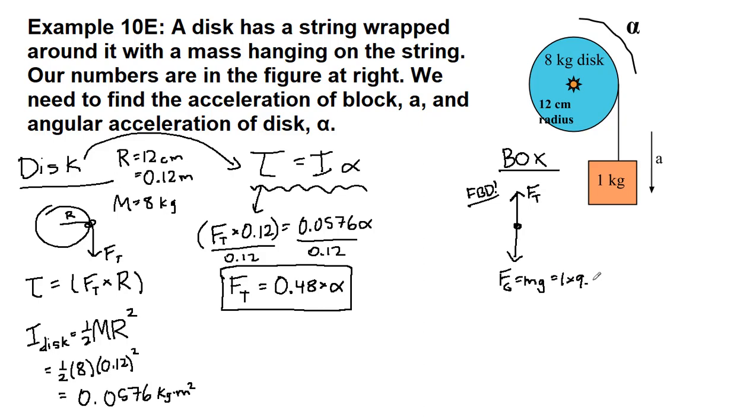1 times 9.8, which is 9.8 newtons. And we have the acceleration, we can draw it in here, and that's going to help us recognize that when we write down f net equals mass times acceleration, we need the gravity piece to be positive in the direction of acceleration minus the tension piece to be negative because it's opposite the direction of acceleration.